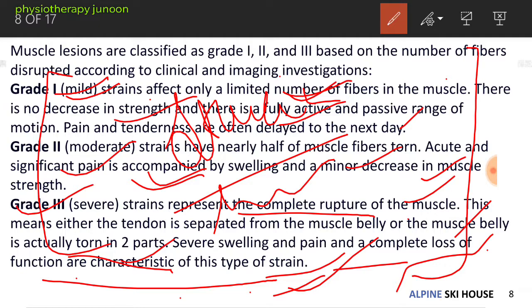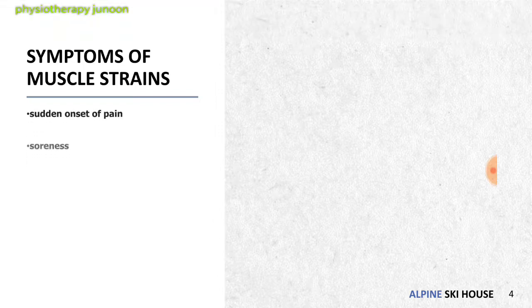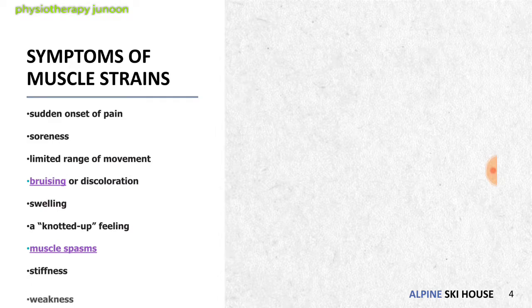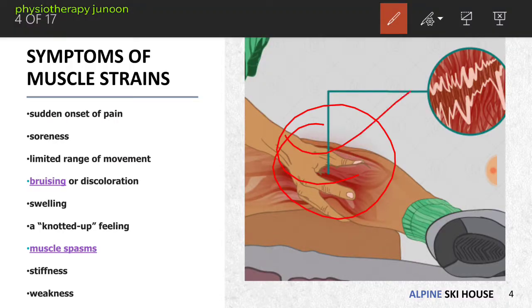The symptoms of muscle strains are: sudden onset of pain, soreness, limited range of motion, bruising or discoloration, swelling, a knotted-up feeling, muscle spasm, and stiffness. For example, as you are walking or running and suddenly feel pain — you cannot move your leg through full range of motion — along with visible bruising, swelling, and muscle spasm.